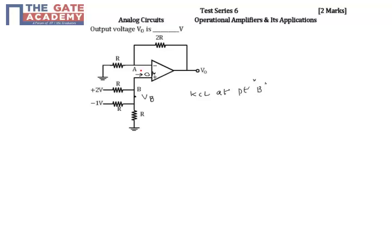If I take all currents entering, this is 2 minus VB by R plus minus 1 minus VB by R plus 0 minus VB by R equal to 0. So this is 2 minus VB minus 1 minus 2VB equal to 0. This is 1 equal to 3VB.